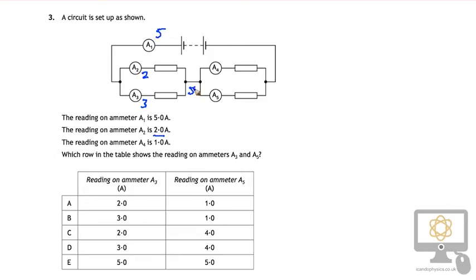Join up to give another five amps again, which again travels into these two branches. The top branch, we're told, the current in ammeter A4 is one amp, which means there must be four amps in the bottom one.